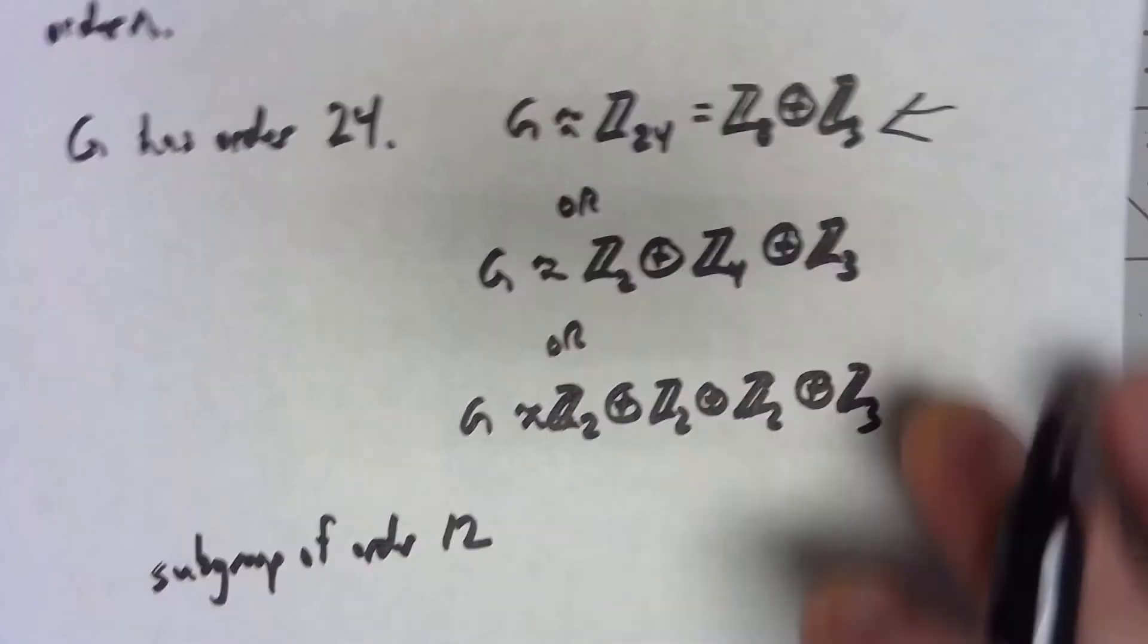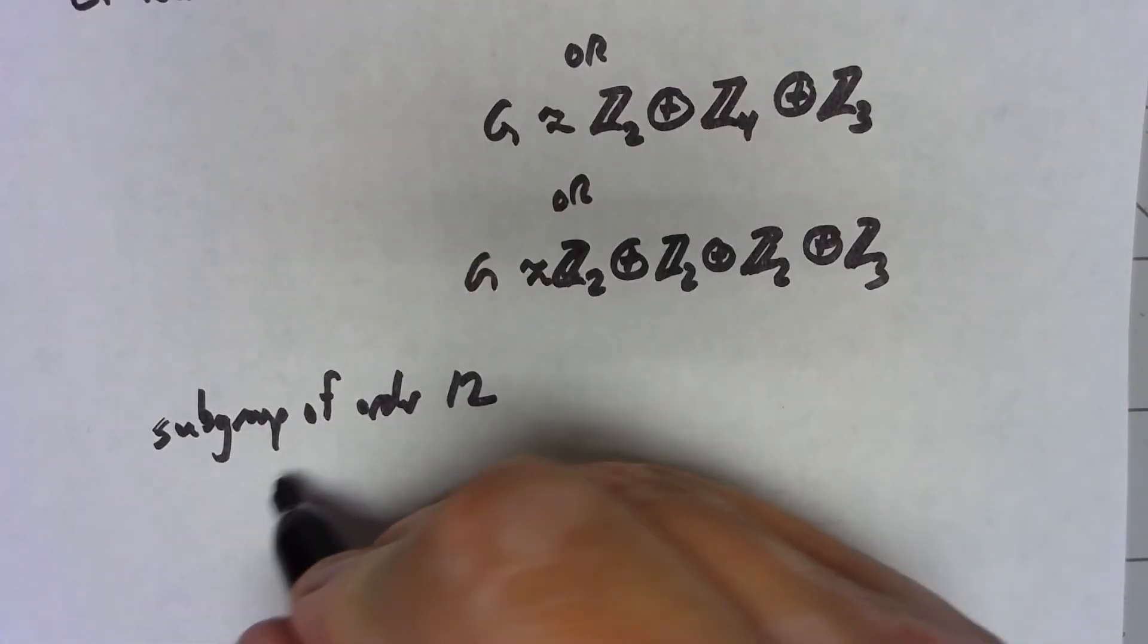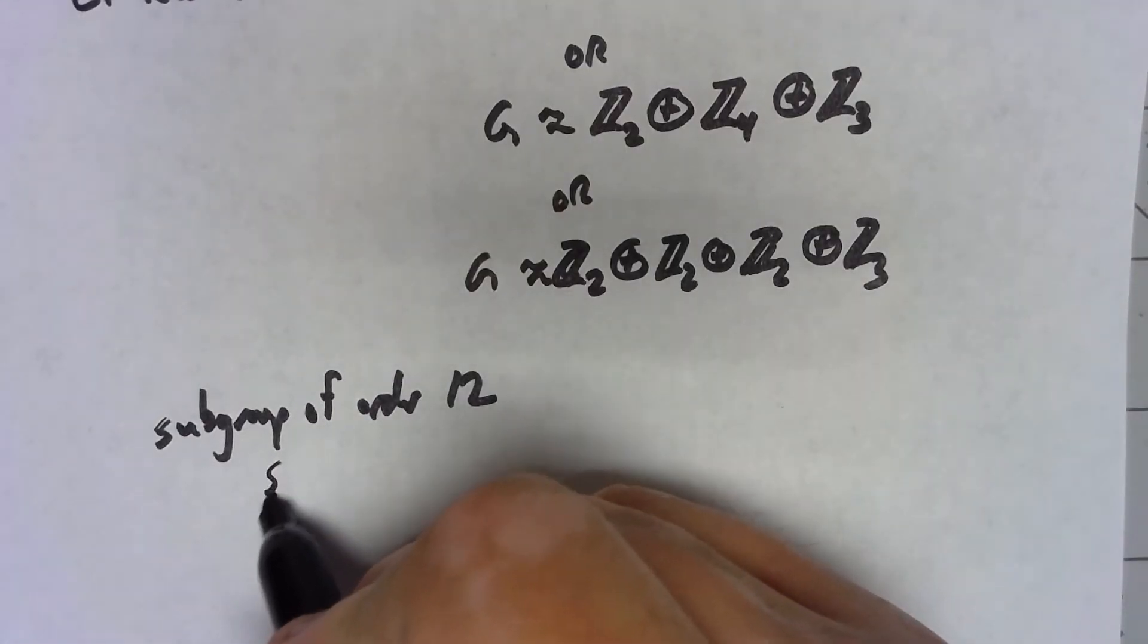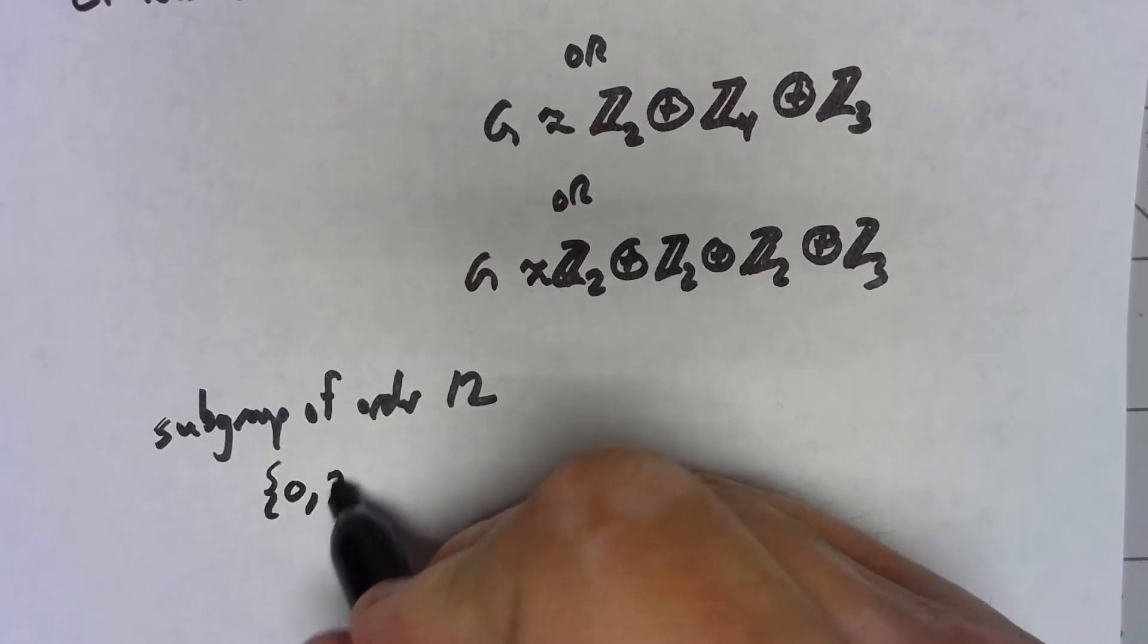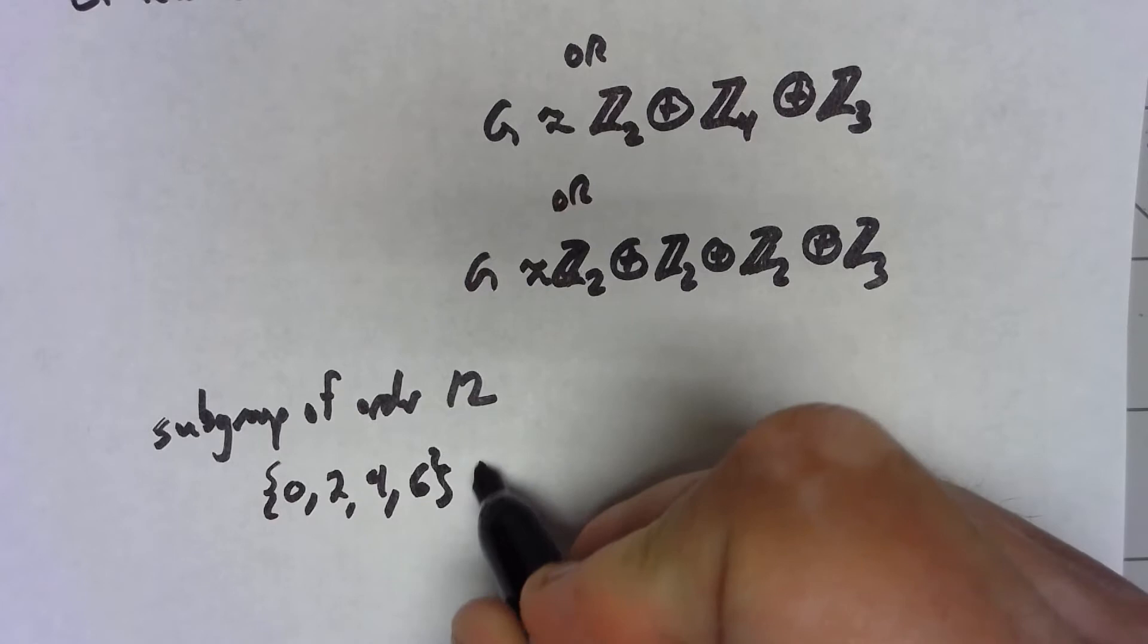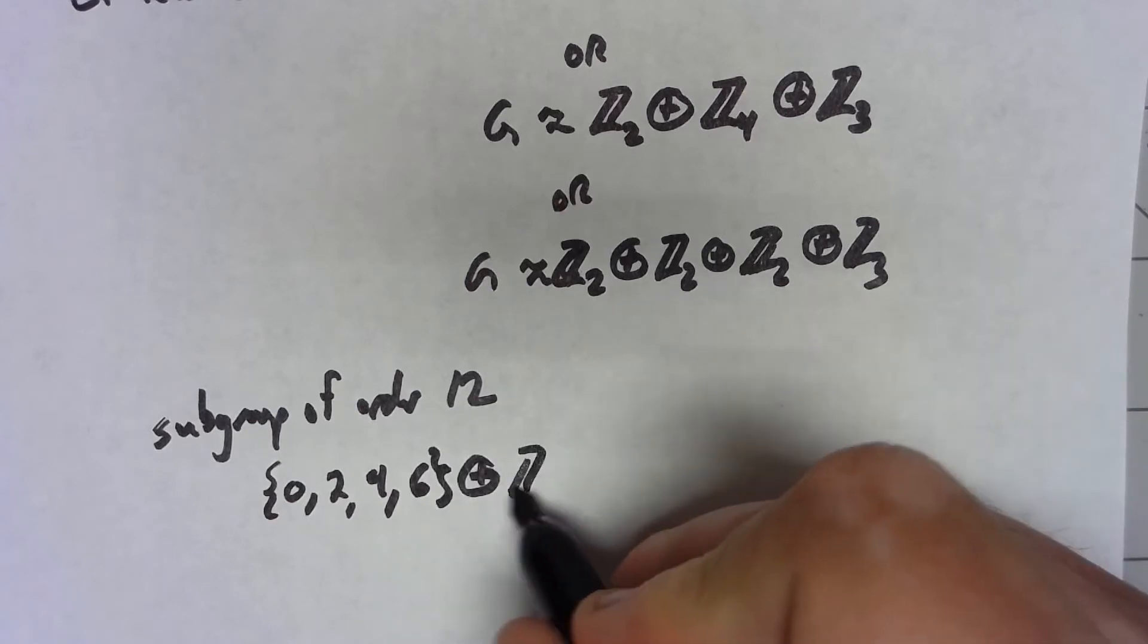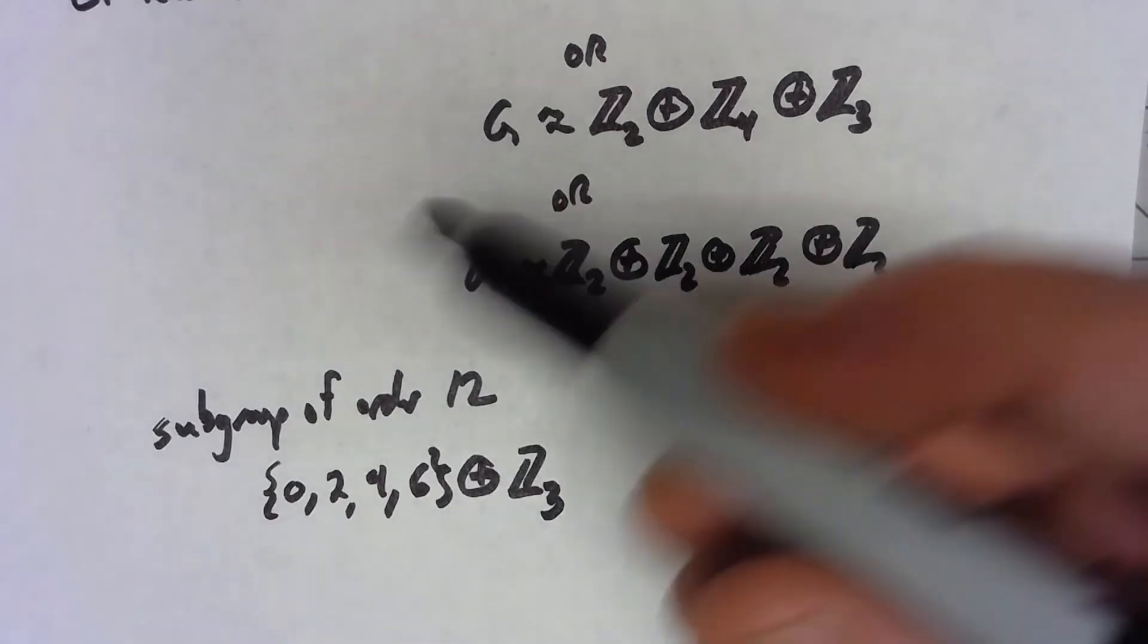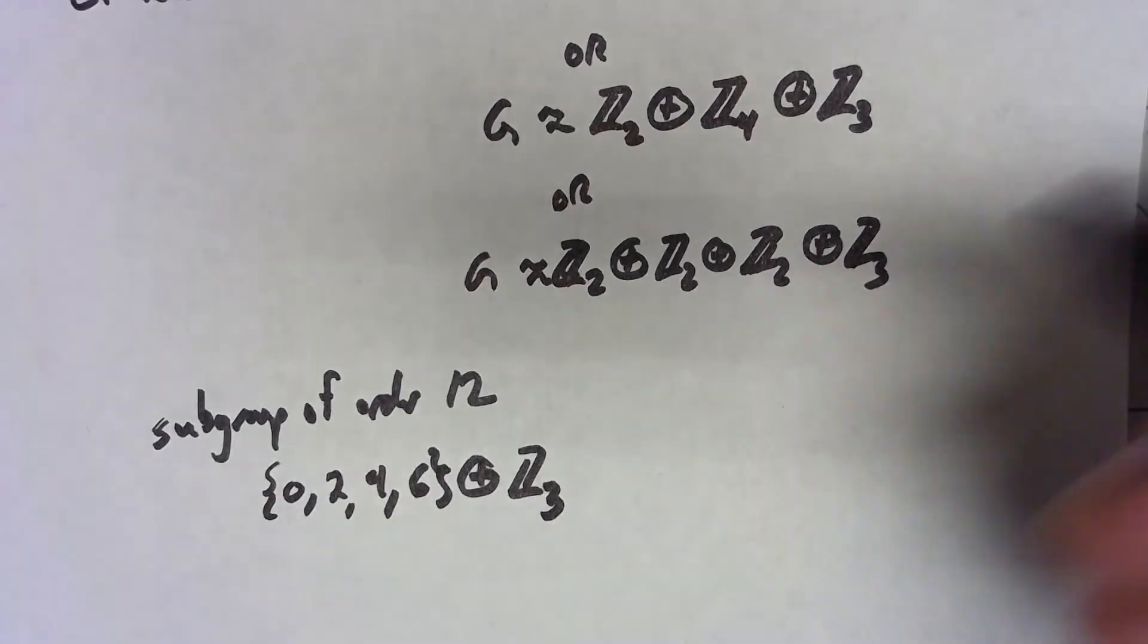If we look at Z8, it has a subgroup {0, 2, 4, 6}. If I direct product with Z3, 4 times 3 would be 12 elements.